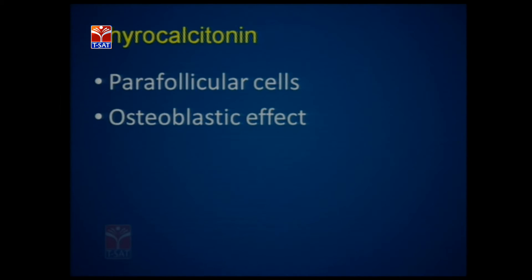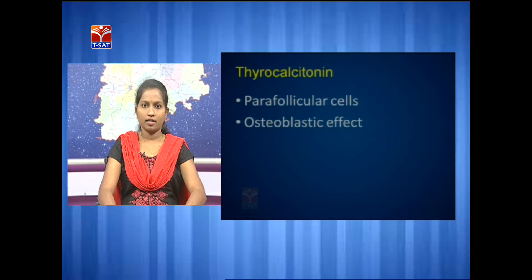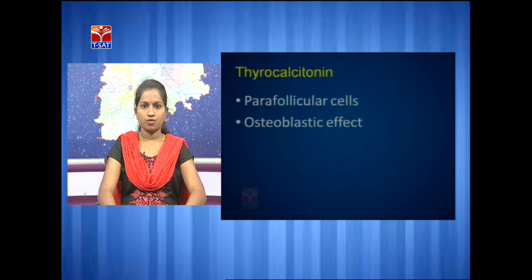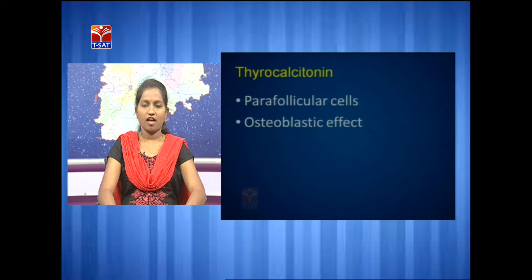Thyrocalcitonin is the next hormone secreted by the thyroid gland. It is secreted by the parafollicular cells of the thyroid gland and shows an osteoblastic effect.